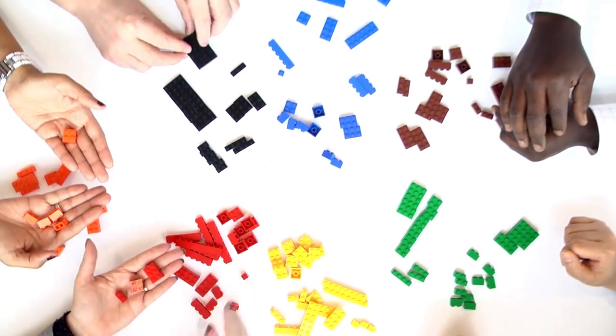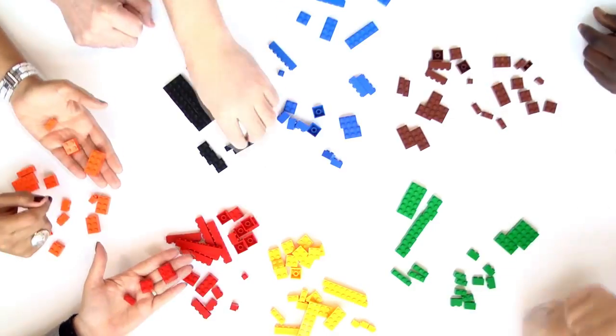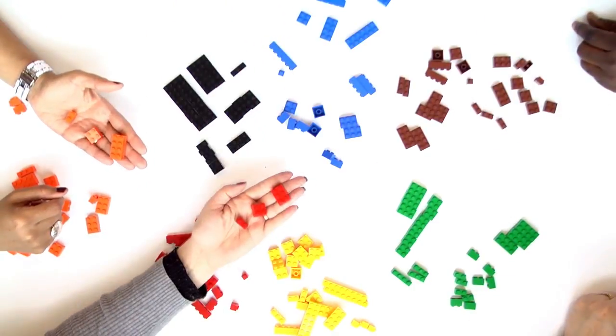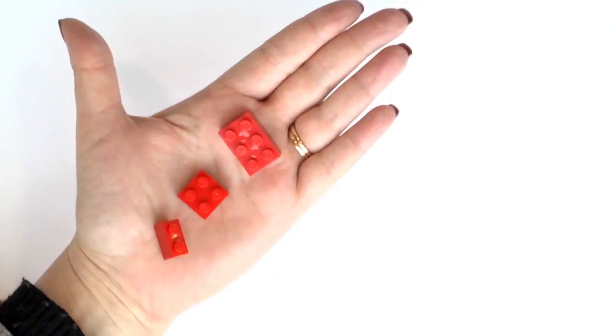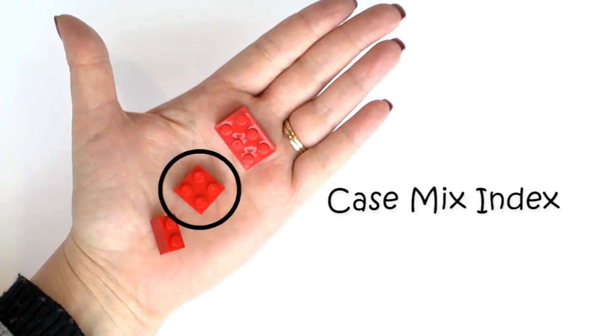We can use this difference to further illustrate the types of resources an individual group might require. Using our blocks, let's say this one with four dots represents the average resources required by an individual and therefore has a case mix index of one.